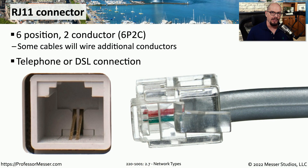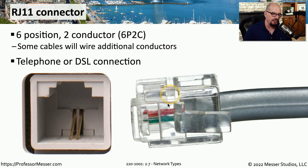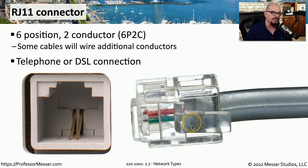If you've connected a traditional analog telephone or use DSL on your network, you've probably used an RJ11 connector. This is referred to as a six position two conductor connector because although there are two wires inside of this connector, there are actually six positions where other wires could be. You might find an RJ11 connector with some additional wires, so there may be six positions and four conductors. This is commonly used for phone connections, and if you're plugging into a DSL modem, you'll often find RJ11 right on the modem itself.